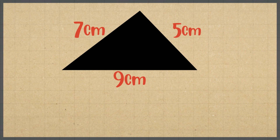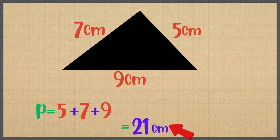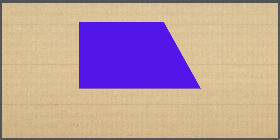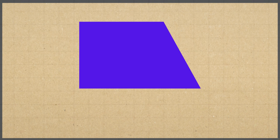To find the perimeter, we add all three side lengths together. When we add five centimeters, seven centimeters, and nine centimeters, the total is 21 centimeters. So the perimeter of this irregular triangle is 21 centimeters.